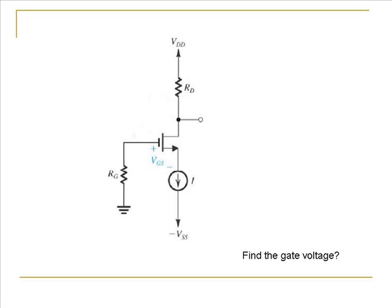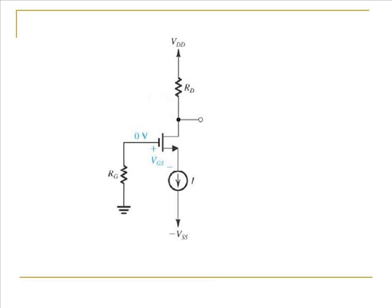Let us analyze a circuit which is a MOSFET biased using a constant current source. To start off, let us find out what the gate voltage is going to be. The current flowing into the gate is zero, because of which the drop across the resistance RG is zero, and therefore the gate voltage is the same as the ground voltage, which is zero volts.